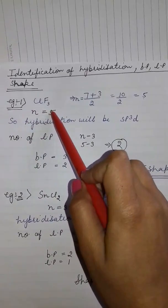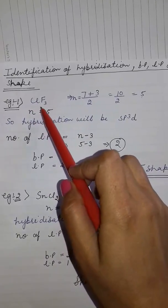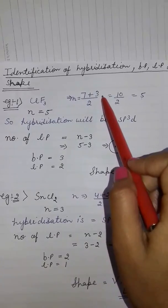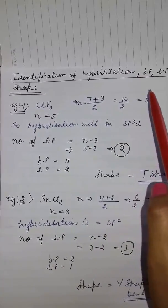an example of ClF3. Here, the number of valence electrons of chlorine is 7, and number of univalent atoms attached to chlorine is 3. 7 plus 3 upon 2 equals 10 upon 2 equals 5. So we get the value of n equals 5.